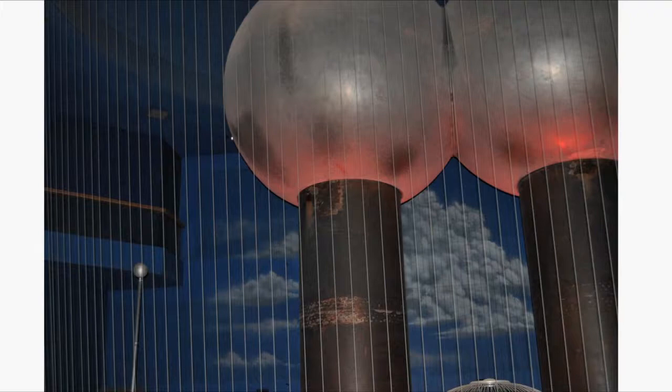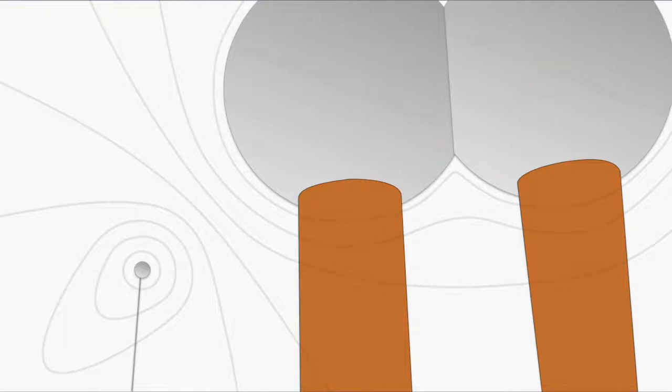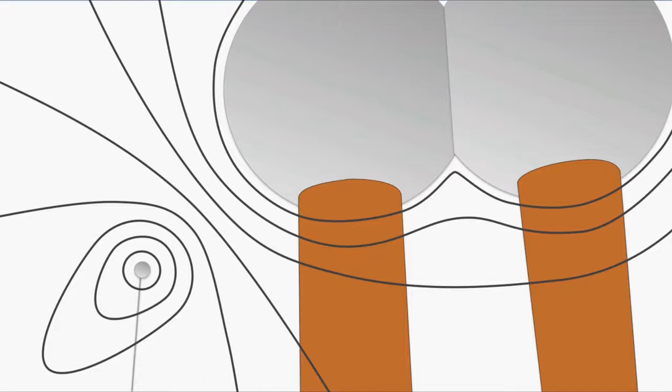Our equipotential lines will hug the surface of the conductors when they're nearby. Because the charge is spread evenly across the surface of the conductor, the whole surface will be at the same electric potential. The equipotential lines will tend to be smoother when farther away from the conductors.